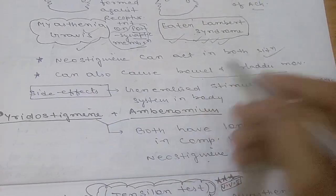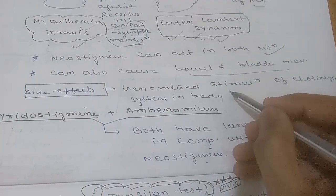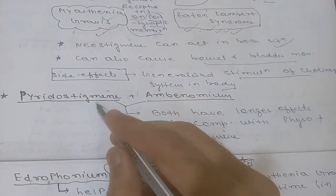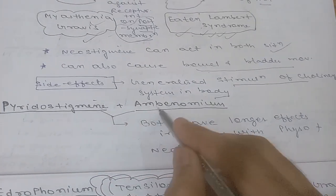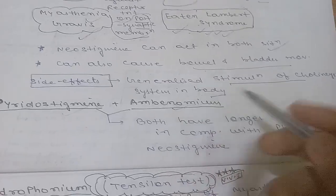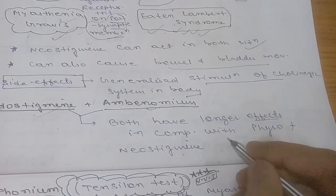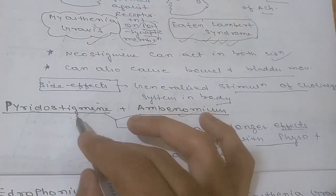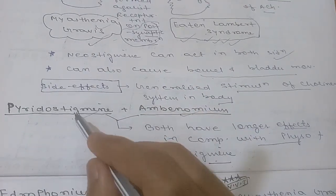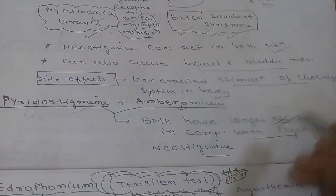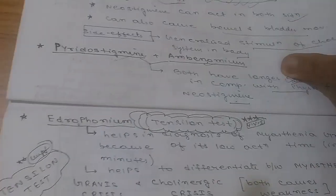The side effect of neostigmine is general stimulation of the cholinergic system. Pyridostigmine and ambenonium both have longer duration of action compared to physostigmine and neostigmine — this is an important distinguishing point.